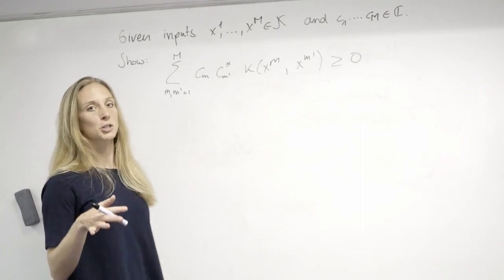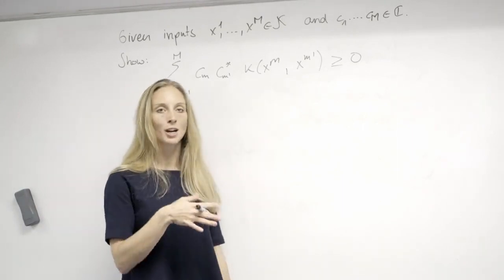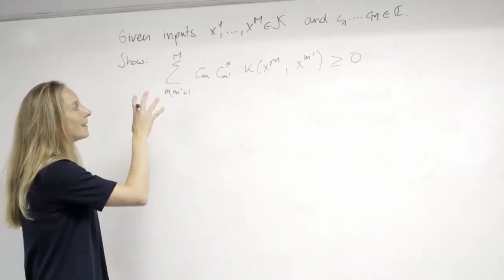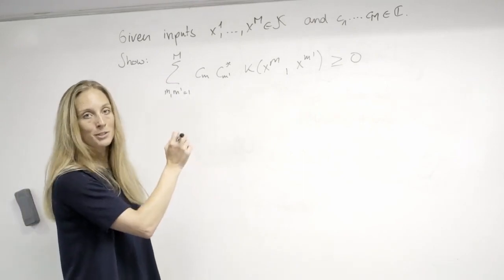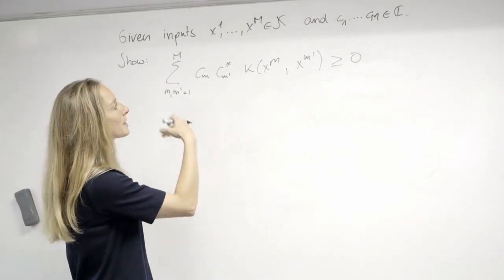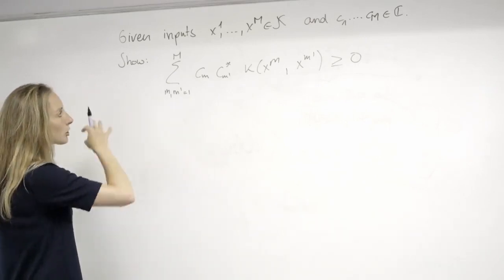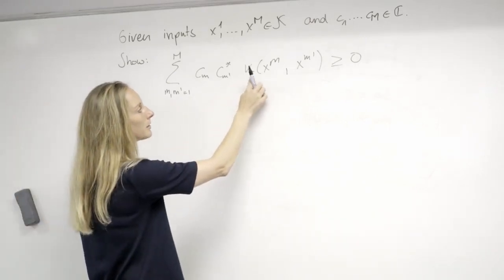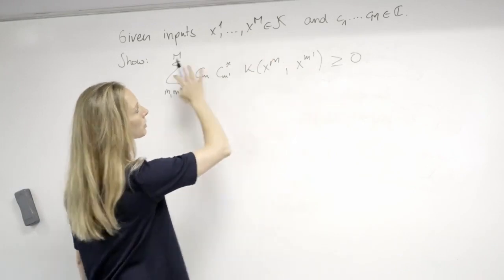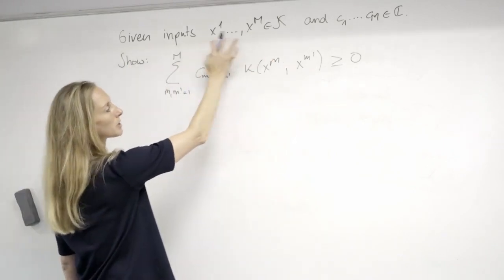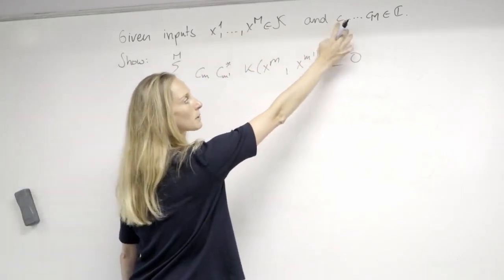The proof of the theorem we just saw is so simple, it's just two lines so I'll just share it quickly with you. I showed you this horrible definition of kernels and you saw there what is the definition of positive definiteness. And it said that a kernel, kappa, is only a kernel if we can show this relation holds. So that means that given inputs, m inputs from the input set and some complex numbers, we have to show that this inequality holds.